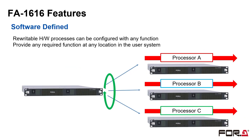The FA1616 is software-defined. By changing the configuration, it can be used according to the operation even with the same unit. There is no need to prepare separate FA1616 units for process A, process B, and process C. A single FA1616 can cover multiple possible operations by switching to process A for today's operation and process C for the next operation.